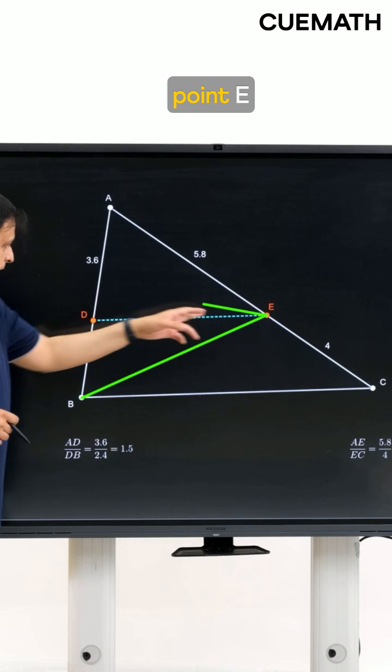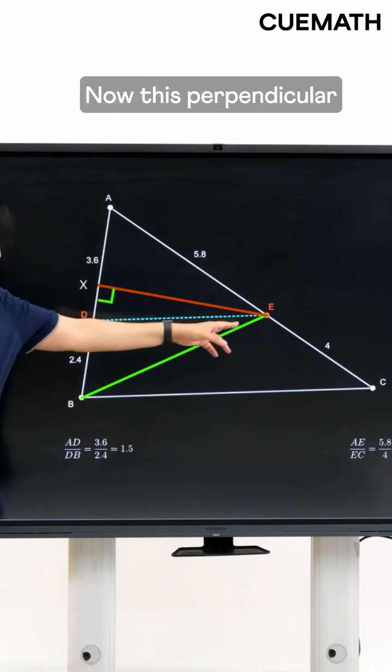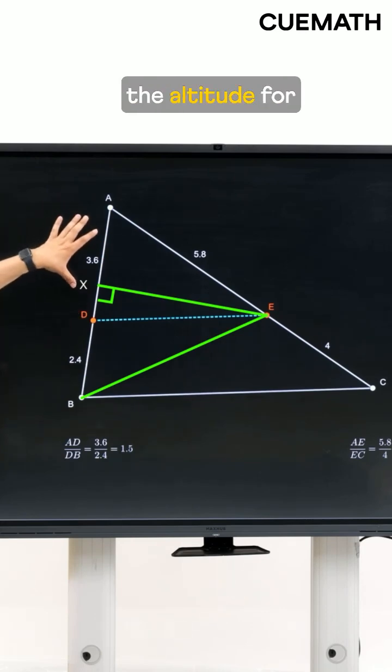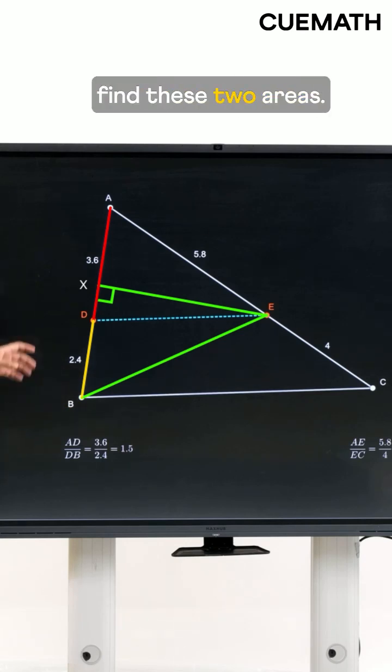So draw the perpendicular from point E to this segment AB. Now this perpendicular EX acts as the altitude for both AD and DB. So it's now easy to find these two areas.